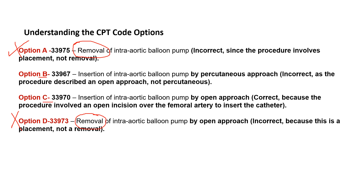Code 33967 is insertion of intra-aortic balloon pump by percutaneous approach. In the scenario, the approach they did was open approach. Hence it is very clear option C is correct. You can read the option C description: insertion of intra-aortic balloon pump by open approach. So for case study 1, the correct answer is option C, which is 33970.